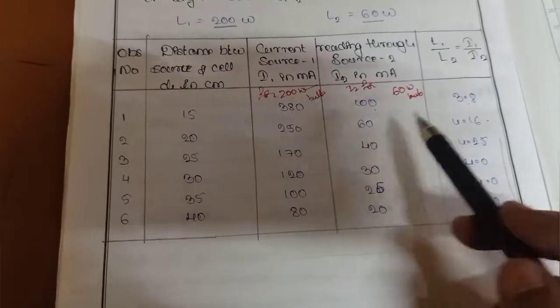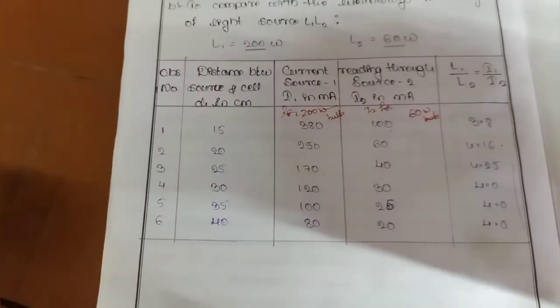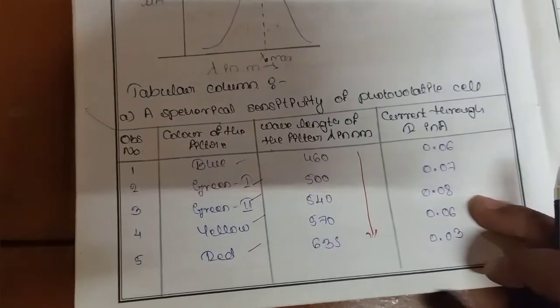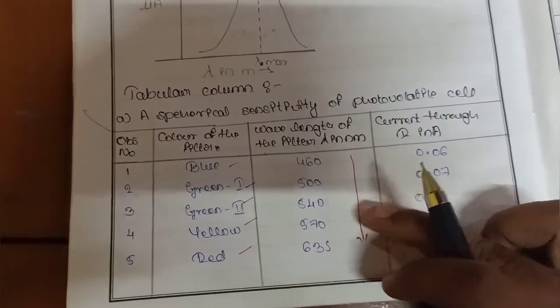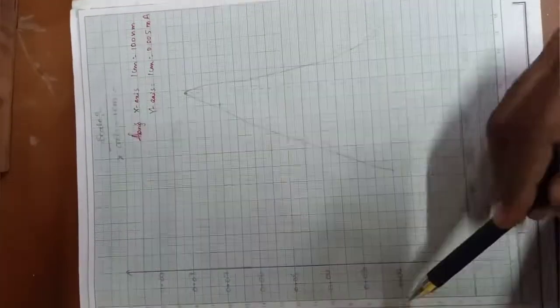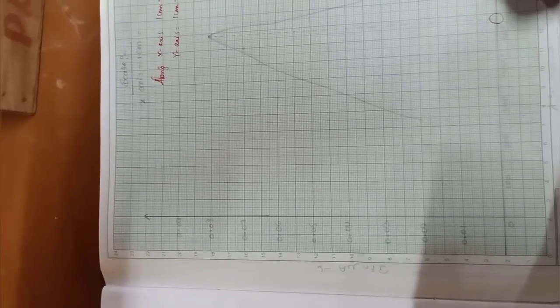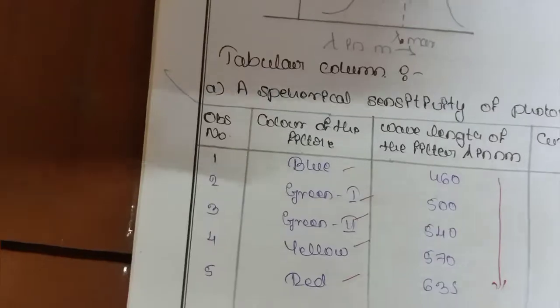Take the ratio: 380 divided by 100 equals 3.8, and 250 divided by 60 equals 4.6. This compares the luminosity and intensity of the source lights L1 and L2. Now plot a graph — wavelength along the X-axis and current on the Y-axis. For light radiation of 570 nanometers, I am getting the maximum peak. This is about the spectral sensitivity of the photo cell.